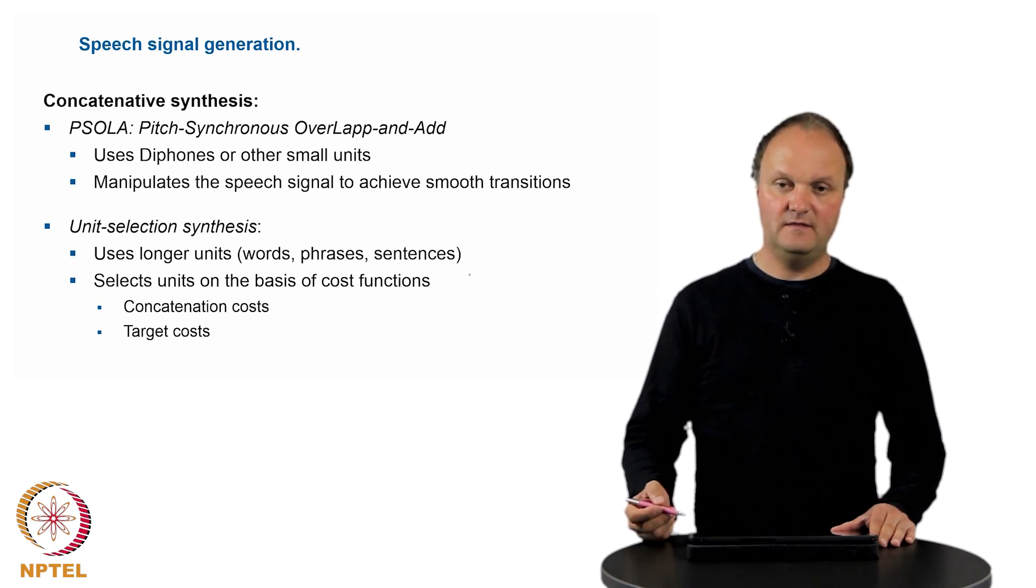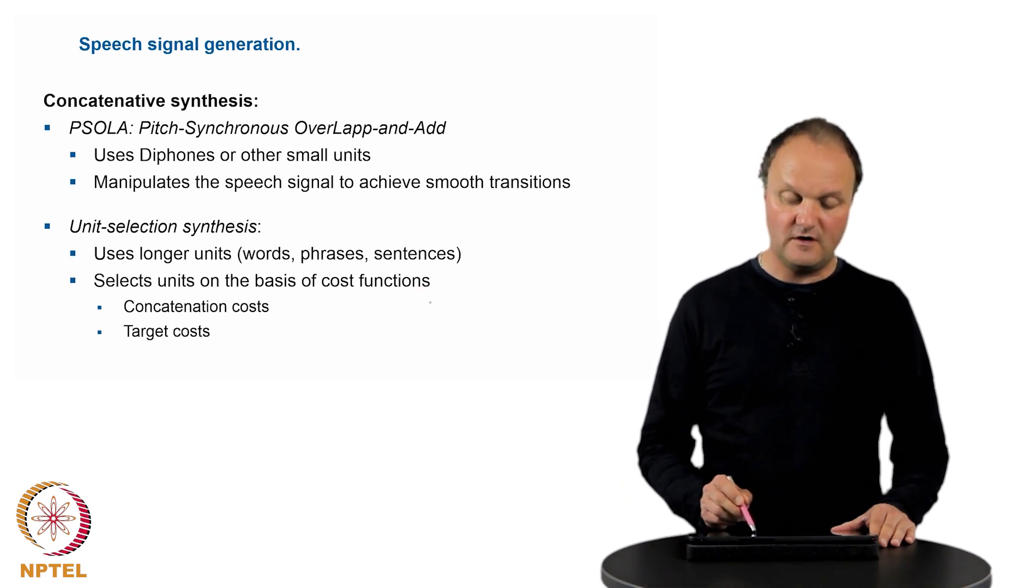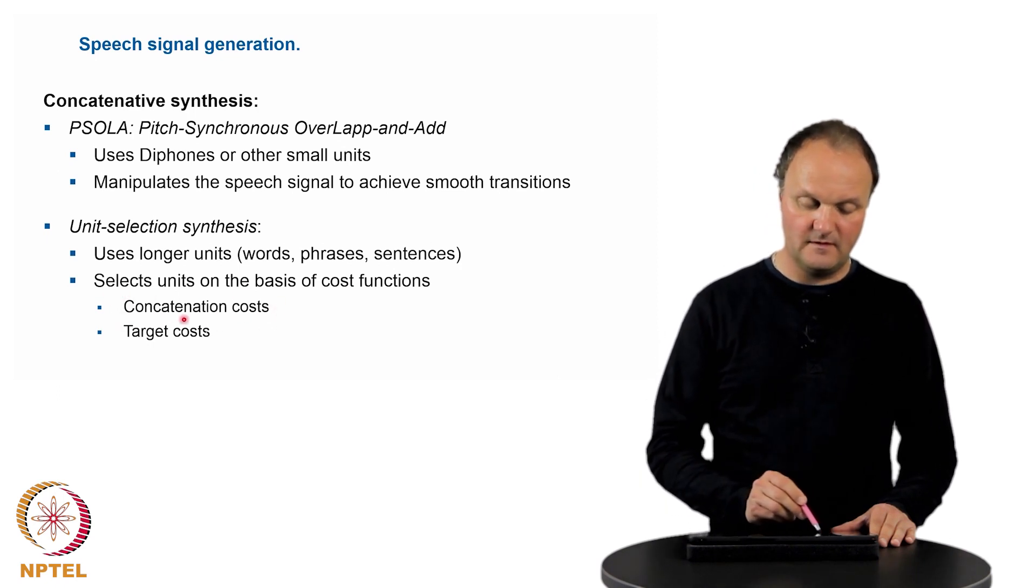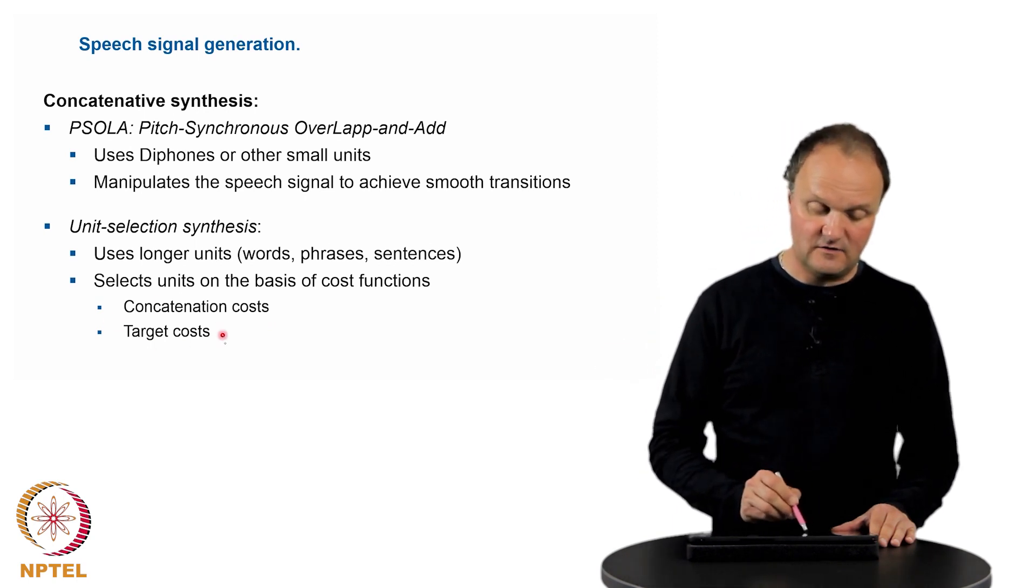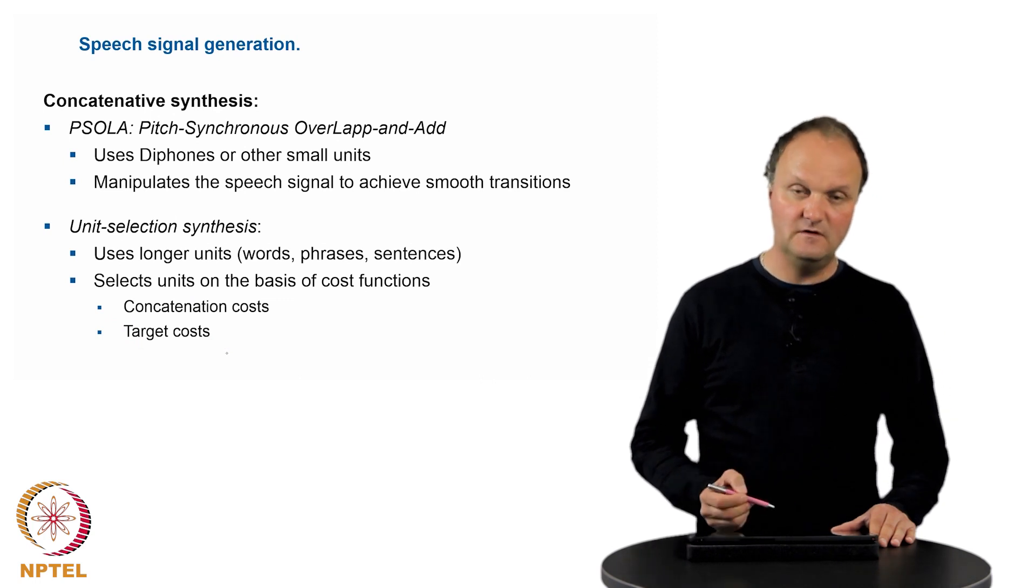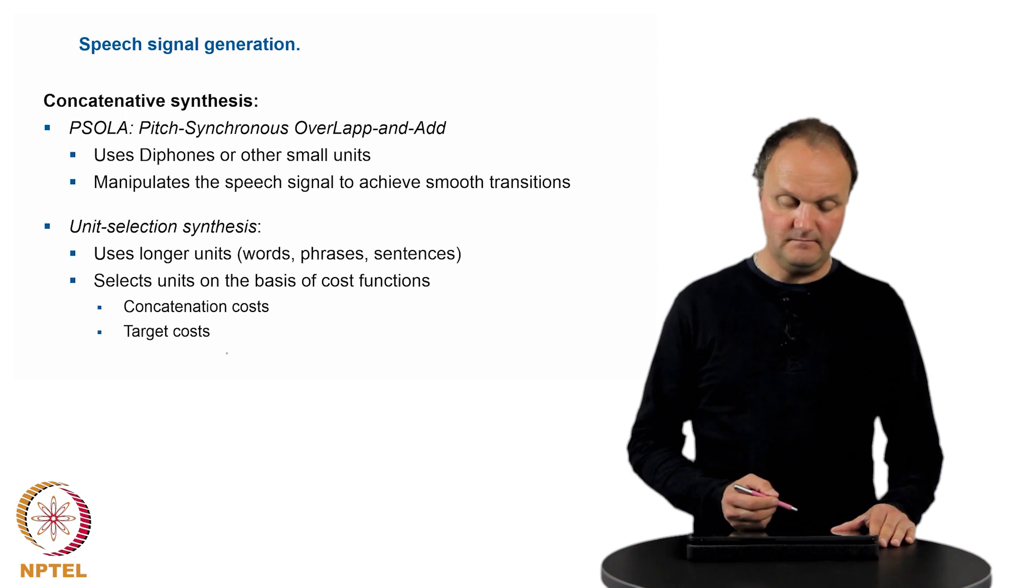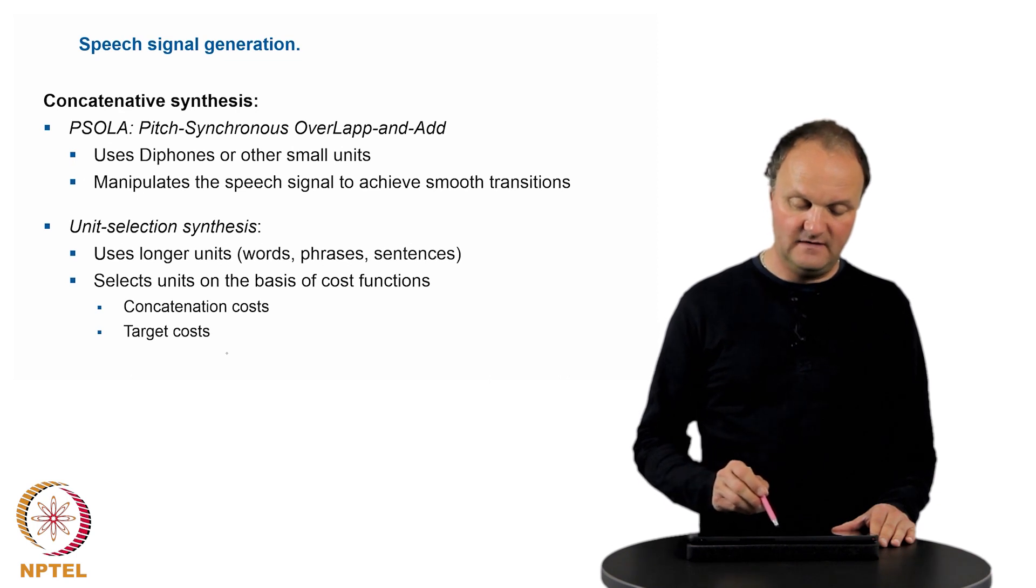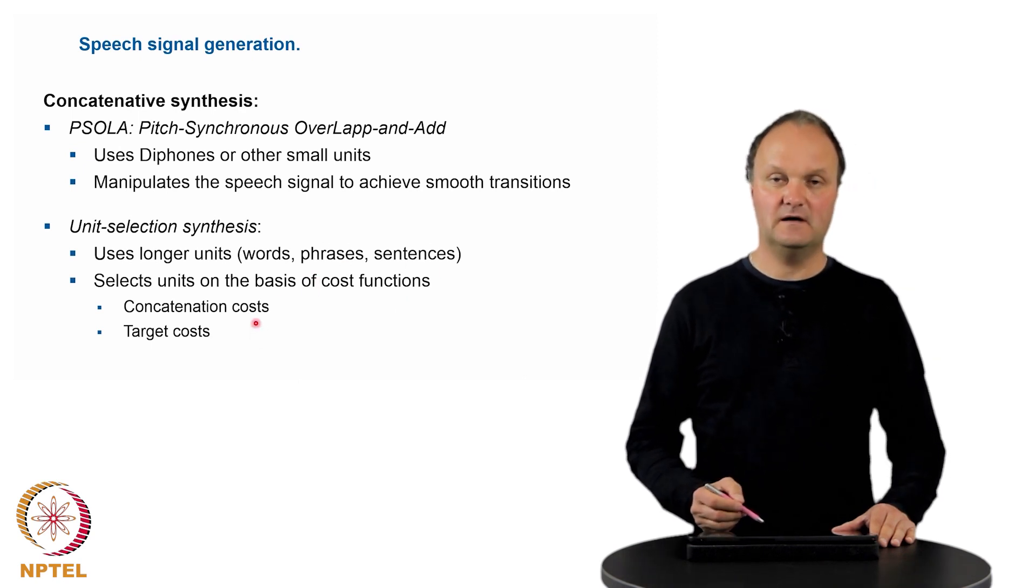Which means that this synthesis approach is based on the calculation of a so-called cost function, which consists of concatenation costs, the cost that the units fit amongst themselves, and the so-called target costs, that is the cost that the unit which is used for the synthesis actually fits what needs to be synthesized. So the principle of so-called unit selection synthesis is to find an ideal sequence of units which minimizes the costs in terms of concatenation costs and target costs.